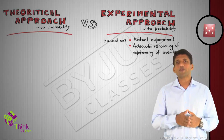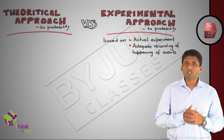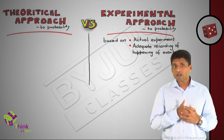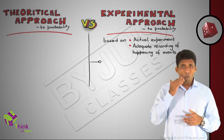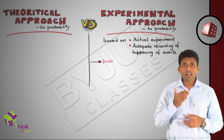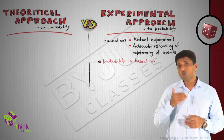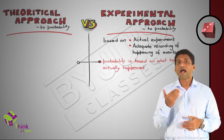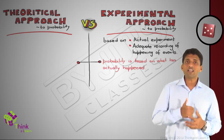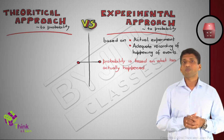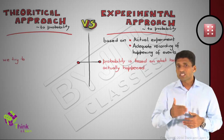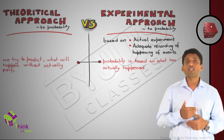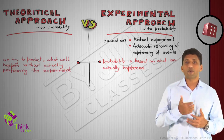The basic difference between these two approaches to probability is that in the experimental approach, probability of an event is based on what has actually happened, while in the theoretical approach, we try to predict what will happen without actually performing the experiments.